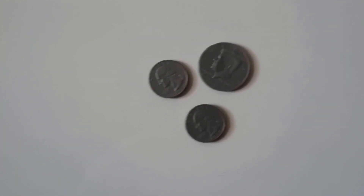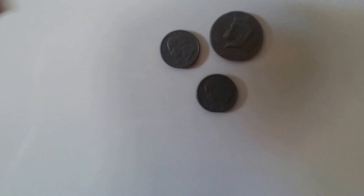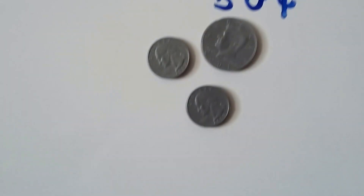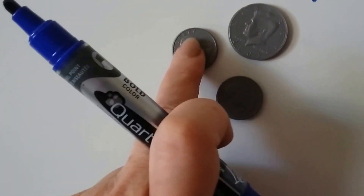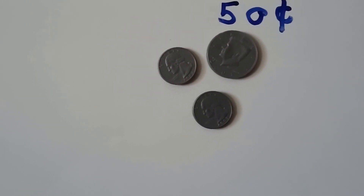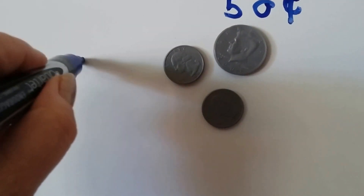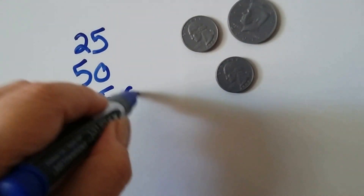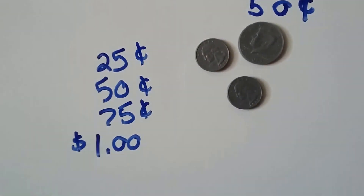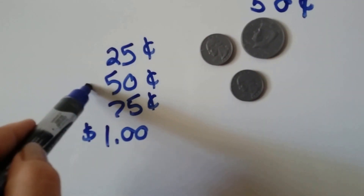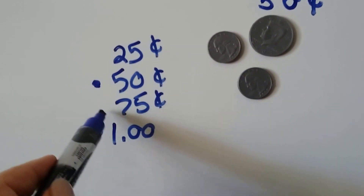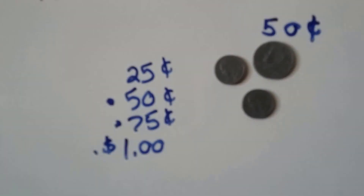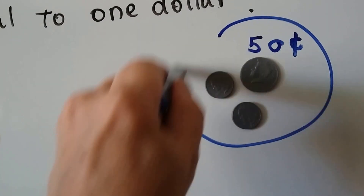Let's try the next group. We start counting with the biggest coin — a 50-cent half dollar — and we have two quarters (25 cents each). Remember how to count by 25s: 25, 50, 75, one dollar. So 50 plus 25 is 75, and the last quarter makes one dollar. Yes, that group is equal to a dollar, so we can circle that one.